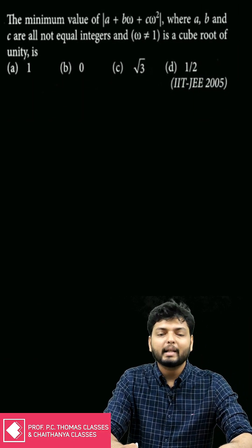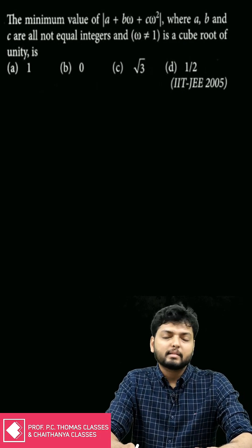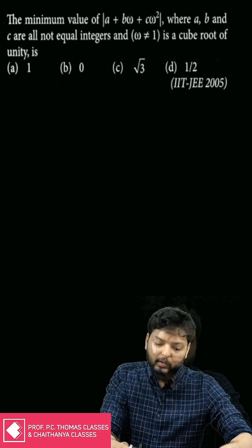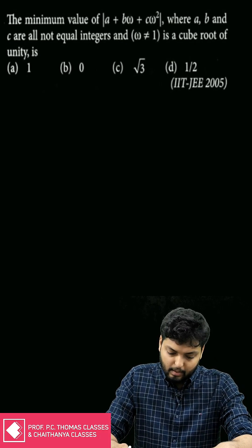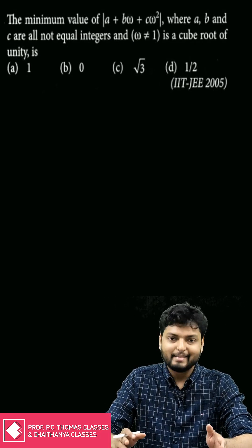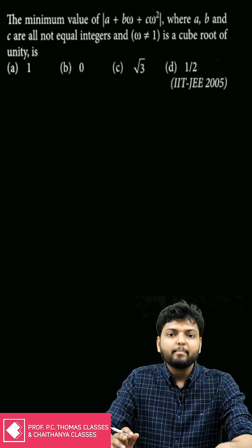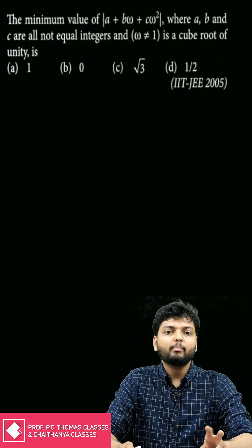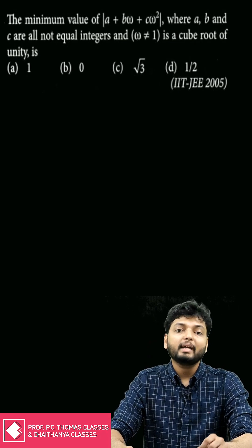Hello dear children, welcome to the first episode of our new series 'Blast from the Past', where we'll be discussing previous year questions from JEE Advanced. The first question asks us to find the minimum value of the modulus of a complex number z = a + bω + cω², where a, b, and c are all integers but not all equal — at most two of them can be equal — and ω is a cube root of unity other than one.